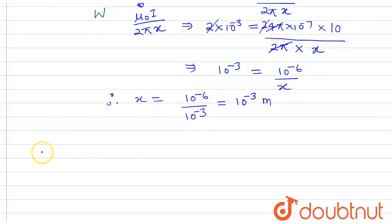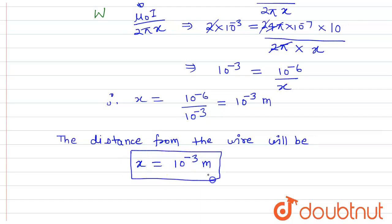The value of x, the distance from the wire will be x equals to 10⁻³ meter. This is the answer of this problem.